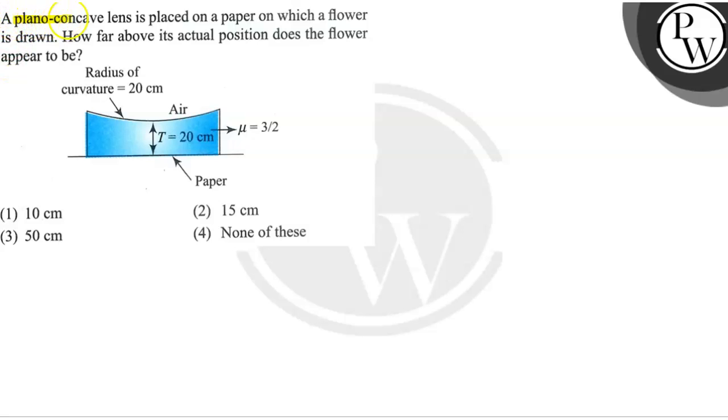Let's see the question. What the question says: a plano-concave lens is placed on a paper on which a flower is drawn. How far above its actual position does the flower appear to be?